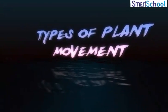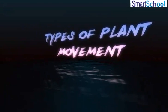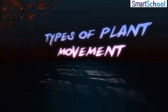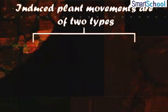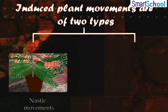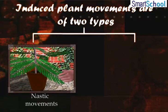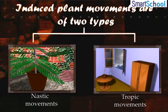Types of Plant Movements. According to the nature of stimulus, plant movements are of two types: 1. Nastic Movements, and 2. Tropic Movements.